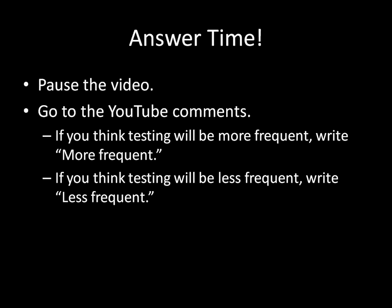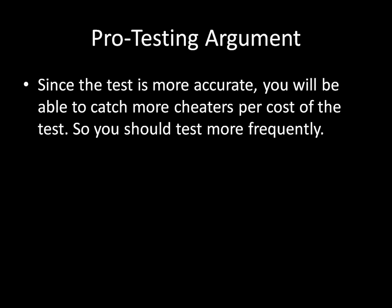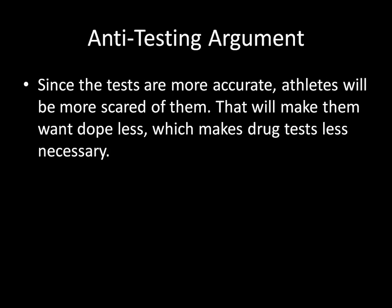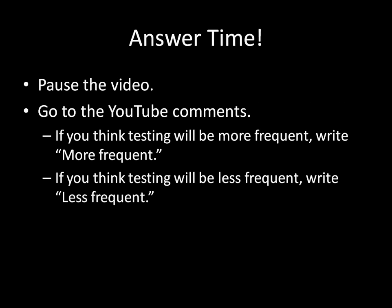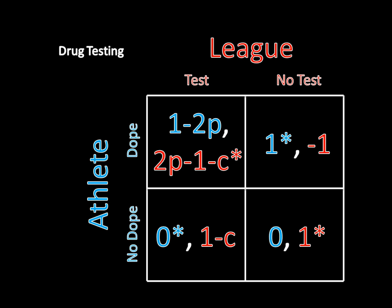Game theory is really useful here because it lets us get past these competing arguments. We could debate them all day without resolution, but with game theory we can show which argument is actually correct. When we solve this game under those assumptions, we get a payoff matrix where best responses show there is no pure strategy Nash equilibrium.